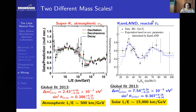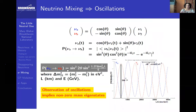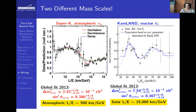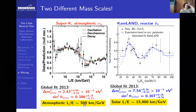When they did the same fit for KamLAND — electron anti-neutrinos oscillating to another flavor — they found Δm² = 7.54 × 10^-5 eV², with sin²θ ≈ 0.30. These two values are very different. So we have two mass-squared differences, corresponding to oscillation scales of 15,000 km/GeV for the solar case and 500 km/GeV for the atmospheric case. Now — this is the key question — what does this tell us about the minimum number of neutrino mass states?